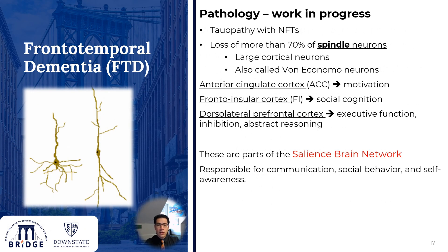Regarding the neuropathology, it involves neurofibrillary tangles and causes loss of 70% of the spindle neurons in the cortex. These are large cortical neurons, unlike the pyramidal cells affected in Alzheimer's disease. When these neurons are affected in the anterior cingulate cortex, it affects motivation. If it affects the fronto-insular cortex, it may affect social cognition. And if it affects the dorsolateral prefrontal cortex, it affects mood, executive function, inhibition, and abstract reasoning.